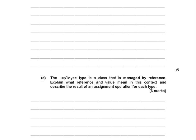Explain what reference and value mean and describe the result of an assignment operation for each type. We're looking for three things really: what do reference and value mean, then an example of an assignment and what happens for a reference, and another for a value. Be very careful when you read these questions to make absolutely sure you answer every part, because if you don't, you won't get the marks.